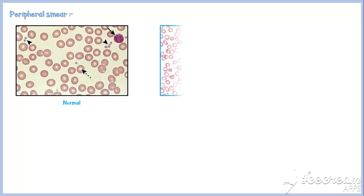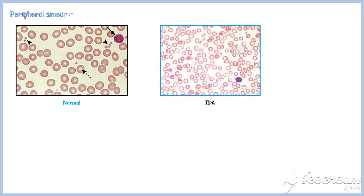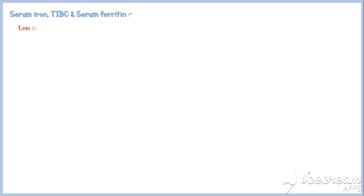Examination of a peripheral blood smear is also an important part of the workup of iron deficiency anemia. The peripheral smear shows microcytic hypochromic red blood cells, along with abnormal pencil-shaped red blood cells.